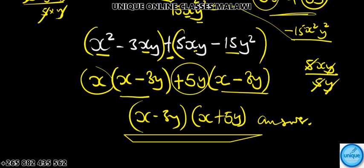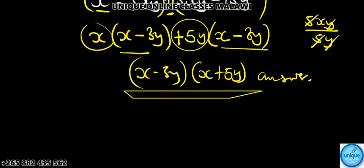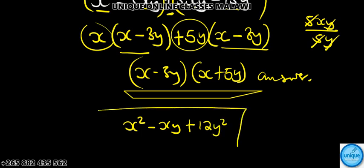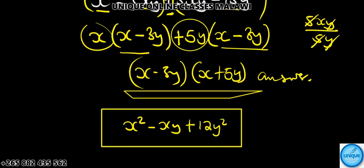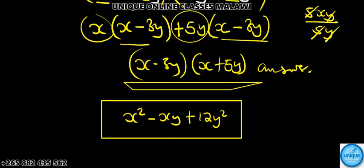Then this exercise: x squared minus xy plus 12y squared. When you can get it, send me back what the answer will be.